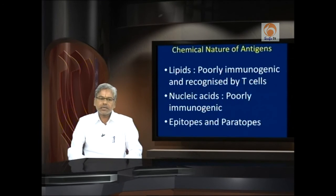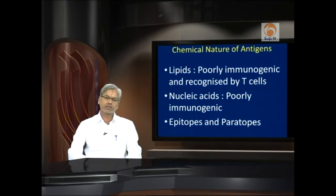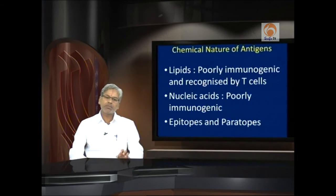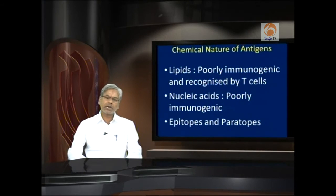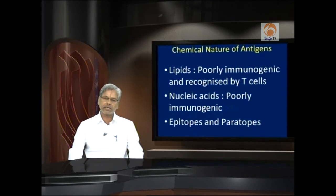Nature is so benevolent that epitopes and paratopes are complementary in their structure, so that a lock-and-key mechanism operates in identification of the antigen and the quick response of the immune system to fight against it. The epitope is that part of the antigen reacting with the antibody; the paratope is that specific part of the antibody reacting with the epitope of the antigen.